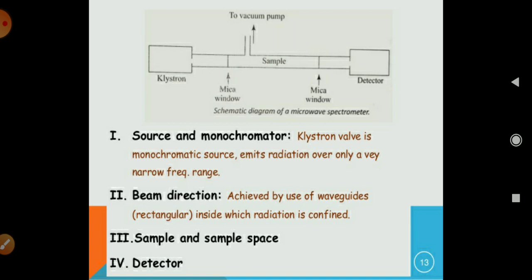So beam direction, what is beam direction? It is achieved by the use of waveguides inside which the radiation is confined. The sample and sample space is here and the final is a detector. So the detector collects the absorption which is absorbed by the sample. So this is all about rotation spectroscopy. Thank you very much.